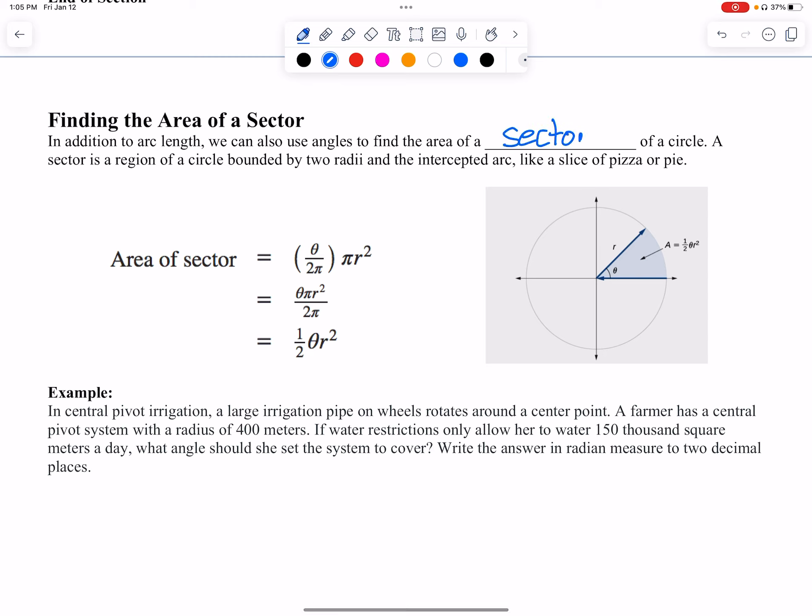A sector is like this whole slice right here. We can't really call it a triangle because we have these two straight sides but this side is curved. A triangle must have a straight edge, at least in Euclidean geometry—that changes in hyperbolic geometry, but for this our sides should be straight, so it's not a triangle.